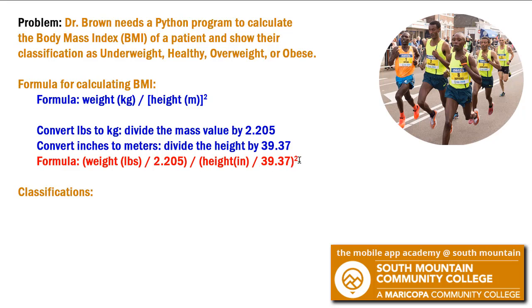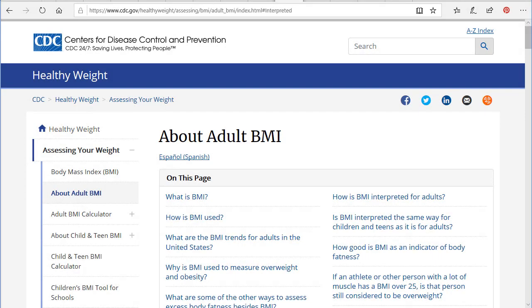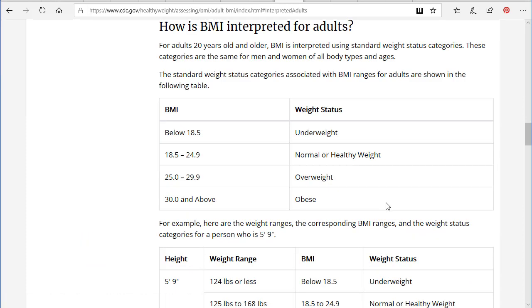That should give me a BMI number. Now I need to take that BMI number and figure out what the classifications are. So I'm going to go back to the internet and find those classifications. I'm back on the CDC site. I'm going to click this link for how is BMI interpreted for adults. And here then are my classifications.